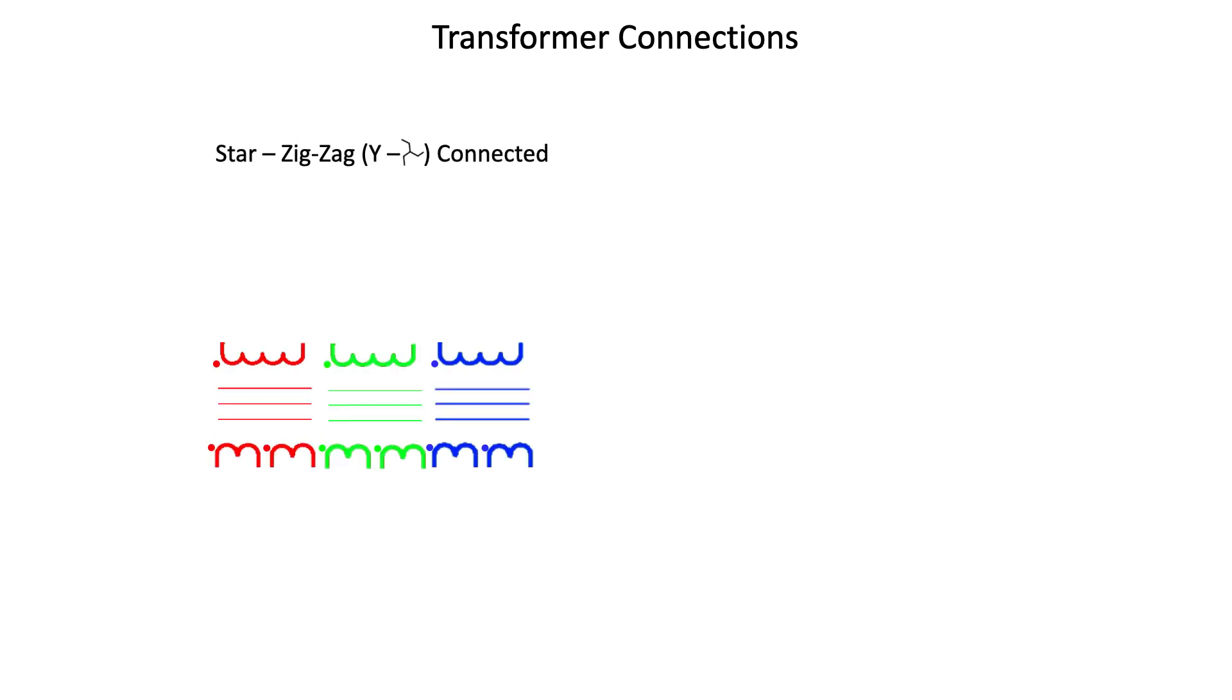So let's look at the connections now that make up this star zigzag transformer. In this transformer, each phase is made up of a single primary winding and two secondary windings. One terminal of the primary terminals are connected to the system lines or buses.